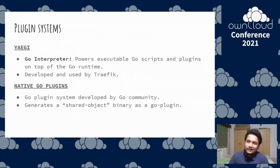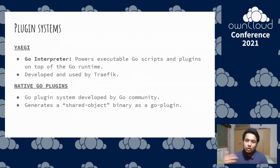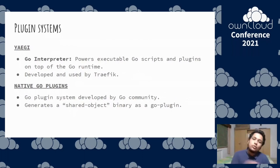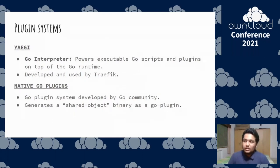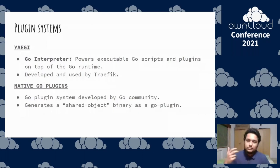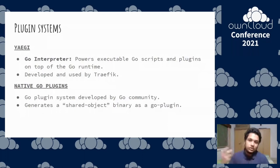Next, we tested a really unique and interesting plugin system called Yaegi. Unlike other plugins in Go that involve working with binaries or executables, Yaegi is a Go interpreter. Instead of compiling the source code and loading it at runtime, it interprets the Go code at runtime — sort of like Go is a script. It's really interesting, and we were leaning towards Yaegi initially. It's actually developed and used by Traefik in their production codebase, and it's under heavy development right now.